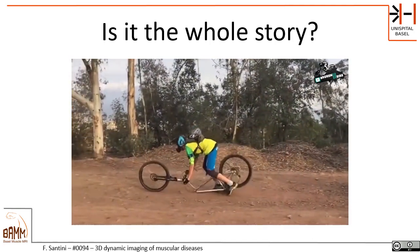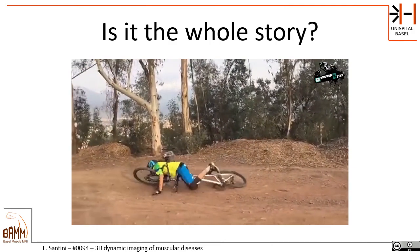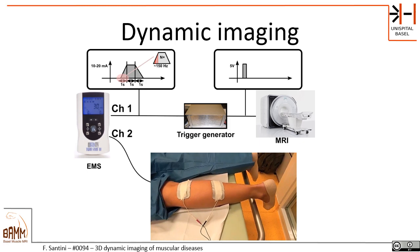We see that there are some weak points here. The point is that if you want to evaluate something in the context of its function, you actually need to see it while it's performing that function. So what we do is we use dynamic imaging, and this is something that has been done before and we've been doing it for a few years.